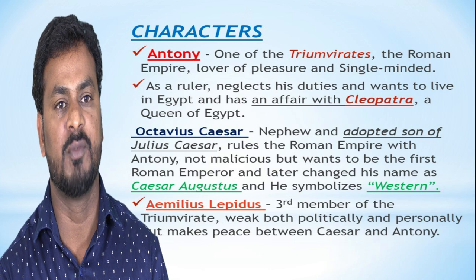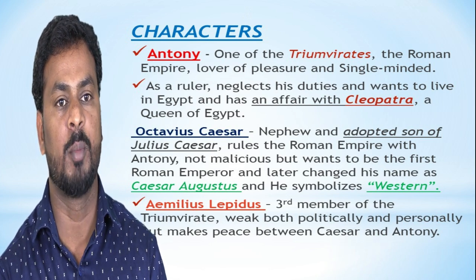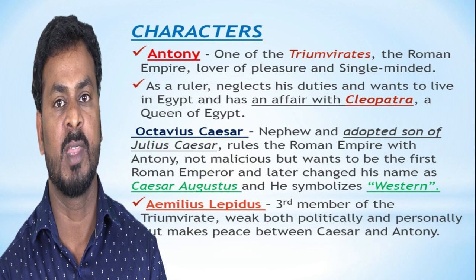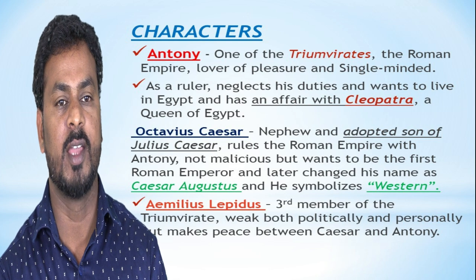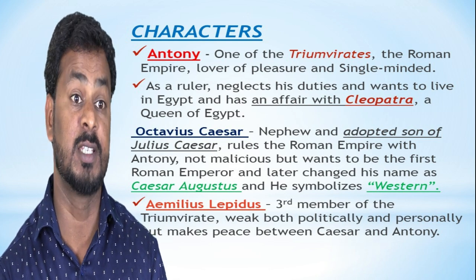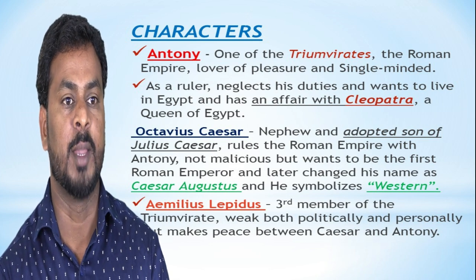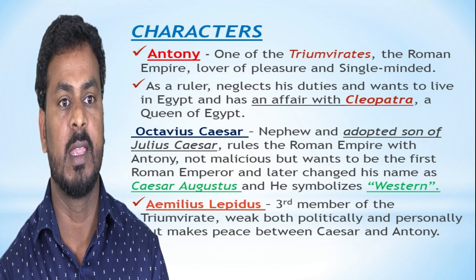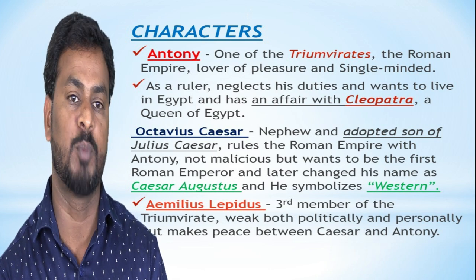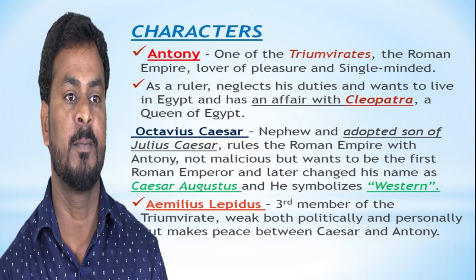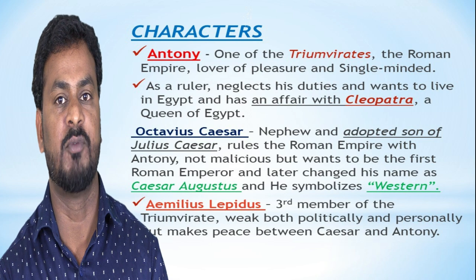Octavius Caesar is a nephew and adopted son of Julius Caesar. He rules the Roman Empire with Antony. He is not malicious but wants to be the first Roman Emperor and later changed his name to Caesar Augustus, and he symbolizes order. Aemilius Lepidus is the third member of the Triumvirate. He is weak both politically and personally but makes peace between Caesar and Antony whenever they fight.